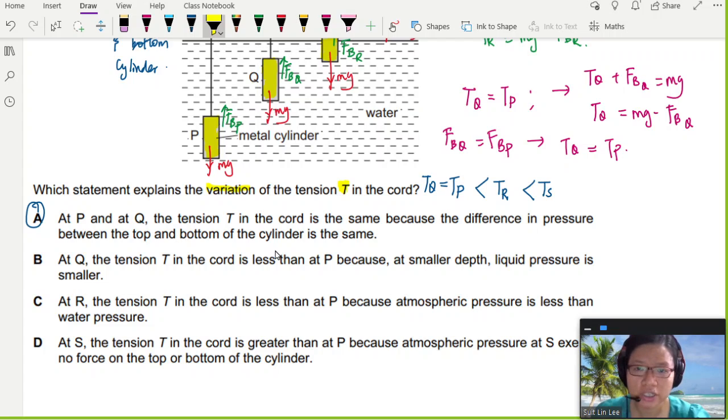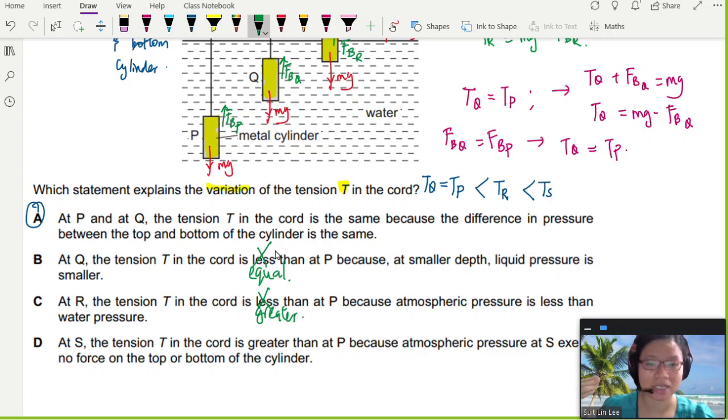At Q, tension in T is less than P. This is not true. Tension in P and T and P is equal. At R, let's look at R. Tension in the chord is less than P. Nope, it is greater. And atmospheric pressure acts on everybody. So everyone gets the same amount of atmospheric pressure. It becomes a constant variable, so it doesn't really affect tension.